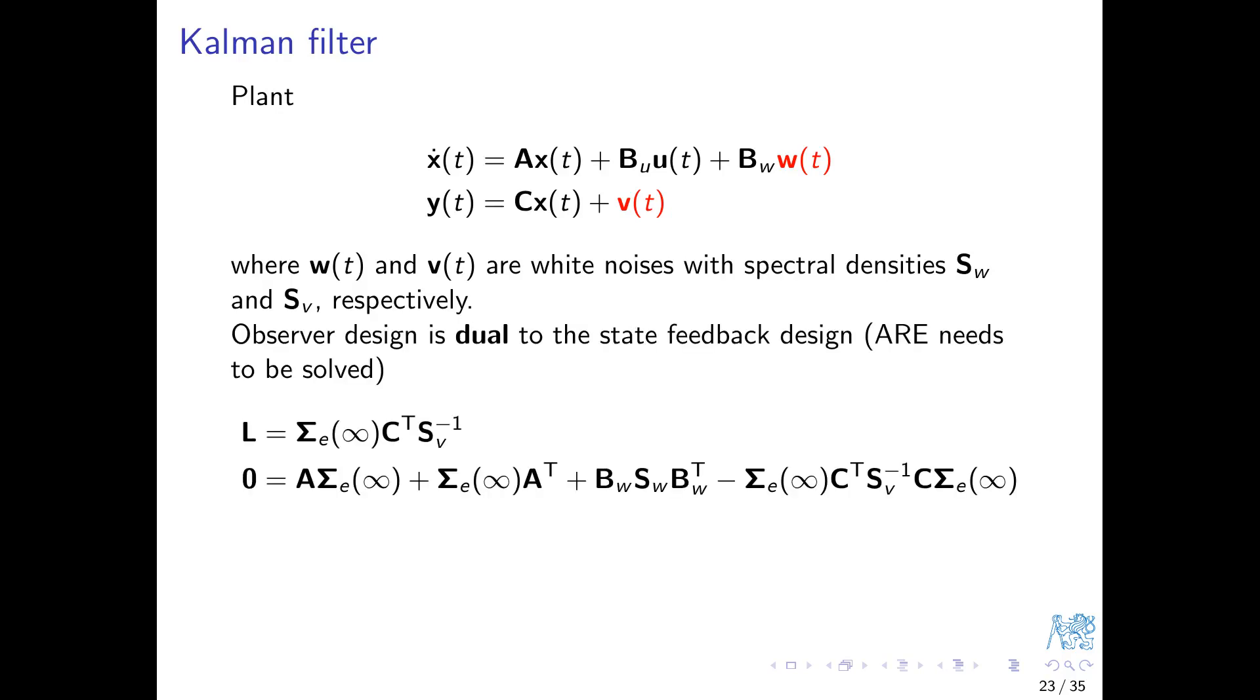For this setup, the matrix L parameterizing the Luenberger observer is desired. Postponing the theory to another course, computationally the task is dual to the LQ optimal state feedback problem. This means that a Riccati equation needs to be solved. The interpretation of the solution is that it is a covariance matrix of the estimation error. The optimal cost is the trace of this covariance matrix, the mean square value of the estimation error.